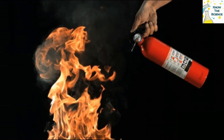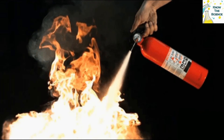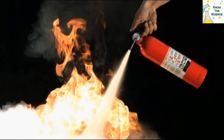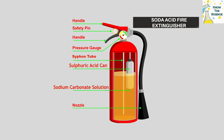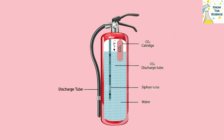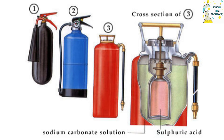Soda acid fire extinguisher is a type of fire extinguisher which is suitable to be used on any types of fire except electrical and inflammable liquid fires. Inside the cylinder will be a bottle containing sulfuric acid and another metallic container containing baking soda solution. On inversion of the cylinder and striking on the ground, the glass bottle breaks and sulfuric acid comes in contact with the baking soda solution, leading to the formation of carbon dioxide gas.